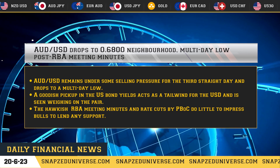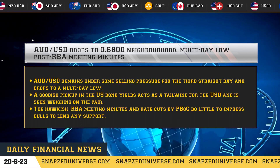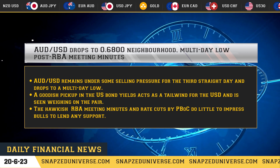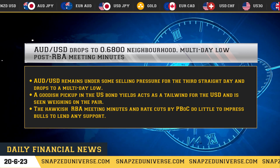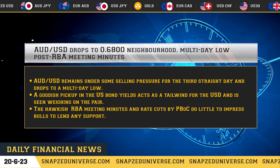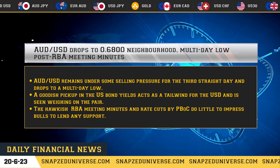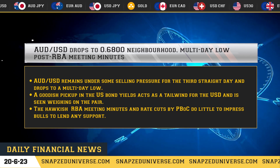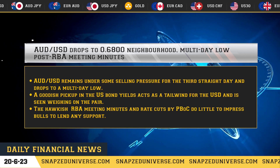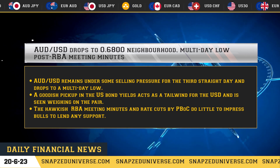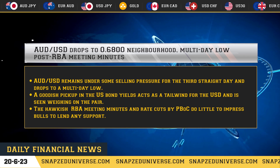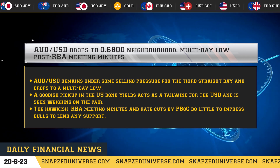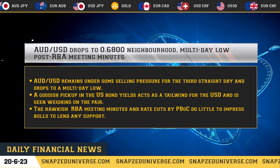AUD/USD drops to the 0.6800 neighborhood, a multi-day low, following the RBA meeting minutes. AUD/USD remains under selling pressure for the third straight day. A goodish pickup in U.S. bond yields acts as a tailwind for the USD, weighing on the pair. The hawkish RBA meeting minutes and rate cuts by the PBoC do little to impress bulls or lend any support.